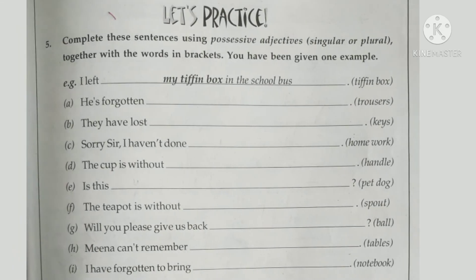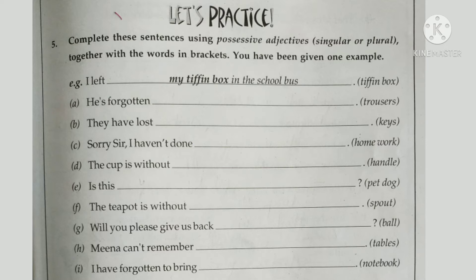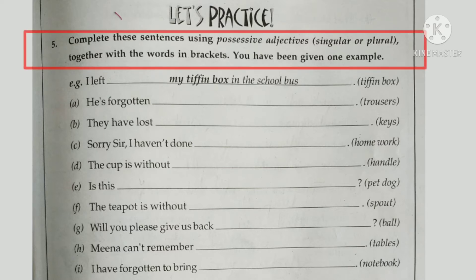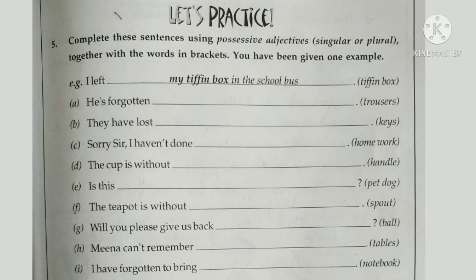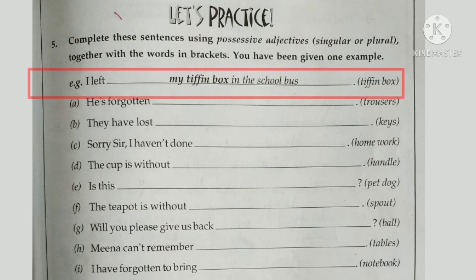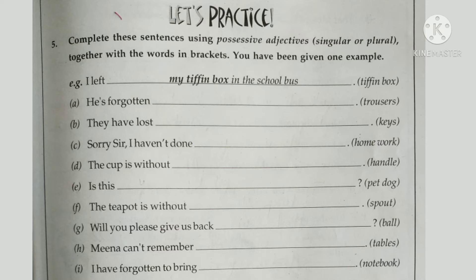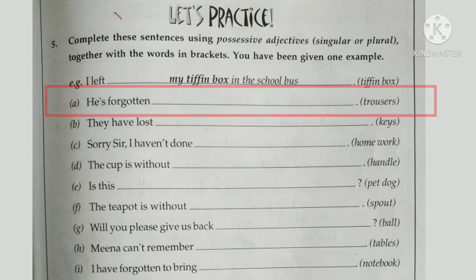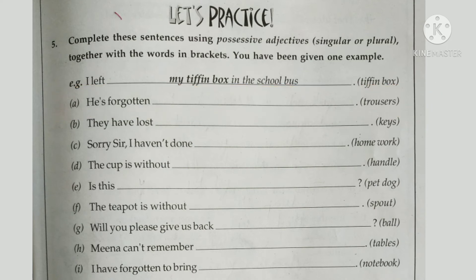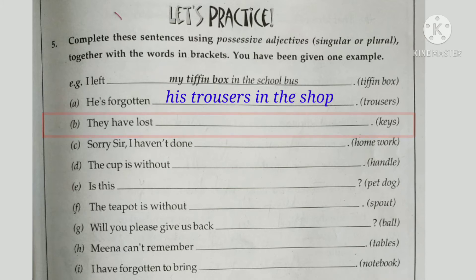Now let's do exercises from your books on pages 141 and 142. In exercise five, complete the sentences using possessive adjectives — singular or plural — along with the words in brackets. Example: 'I left my tiffin box in the school bus' — 'my' is the possessive adjective for 'I.' Sentence a: 'He has forgotten his trousers in the shop' — for 'he' we use 'his.' Sentence b: 'They have lost their keys in the park' — for 'they' we use 'their.'